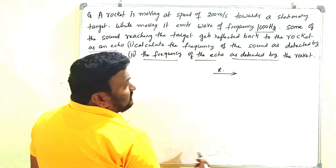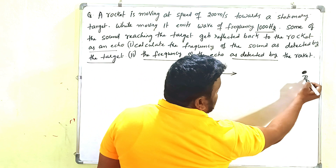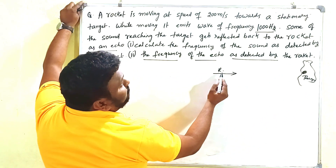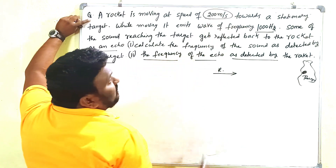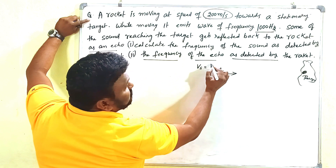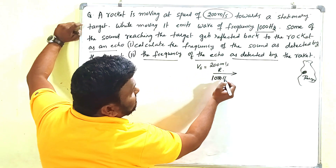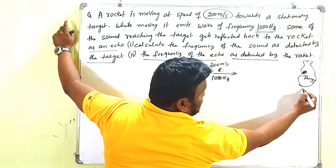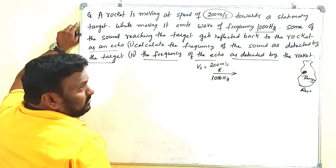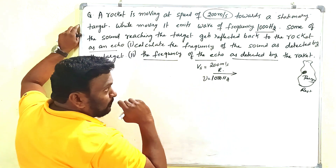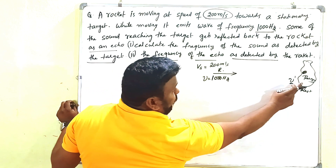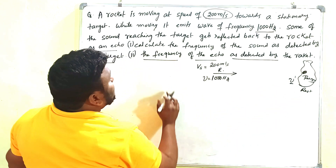So, the rocket is moving like this towards the target. The rocket is moving with a speed of 200 meters per second — that is vs = 200 m/s. The rocket is having some frequency, which is 1000 Hz. When this rocket approaches towards the target, at the rest position the frequency is ν (nu), and when it reaches the target the frequency is ν dash — that is the apparent frequency.